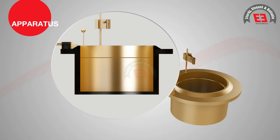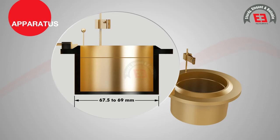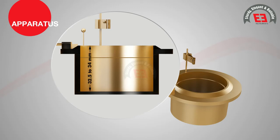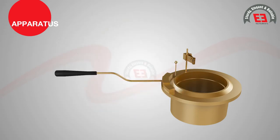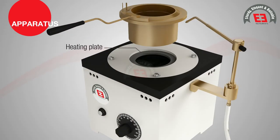The inside diameter of the cup is between 63 to 64 mm. The outside diameter of the cup is between 67.5 mm to 69 mm. The filling mark is between 9 mm to 10 mm from the top of the cup. The inside height of the cup is between 32.5 mm to 34 mm. The heating plate is of sufficient dimensions and material to ensure that thermal heat to the test cup is applied only to the bottom of the test cup.